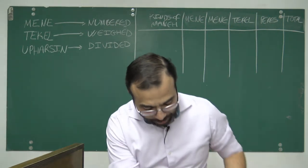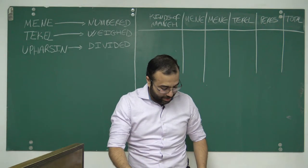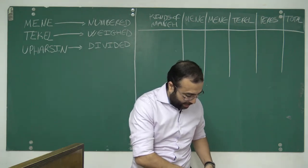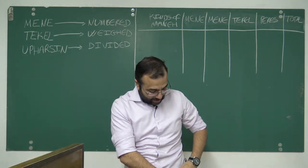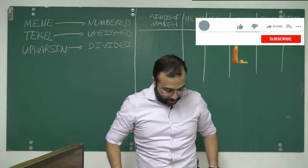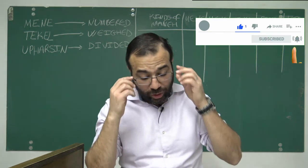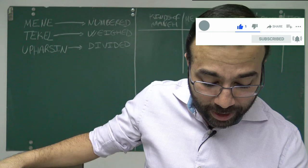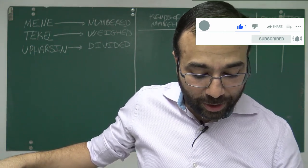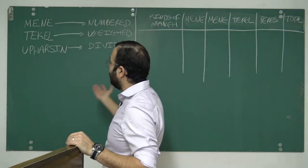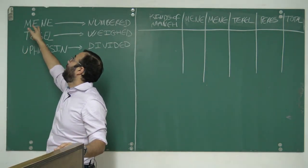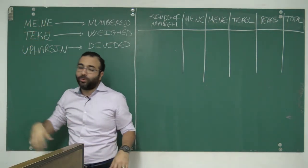Belshazzar, the grandson of Nebuchadnezzar, was partying and brought the candlestick and vessels of the Lord that his grandfather had taken in the captivity from the destruction of Jerusalem seventy years earlier. He was partying when a hand appeared out of nowhere and wrote on the plaster of the wall by the candlestick: Mene, Mene, Tekel, Upharsin.